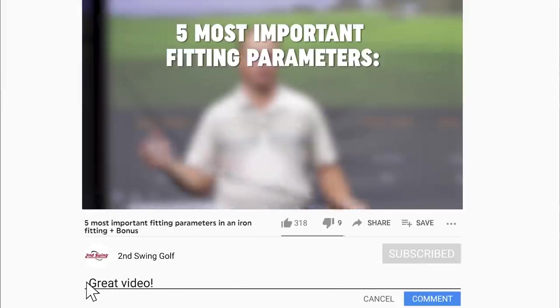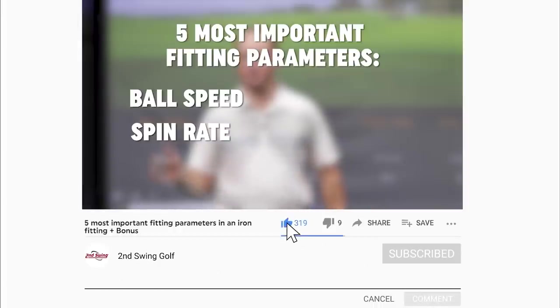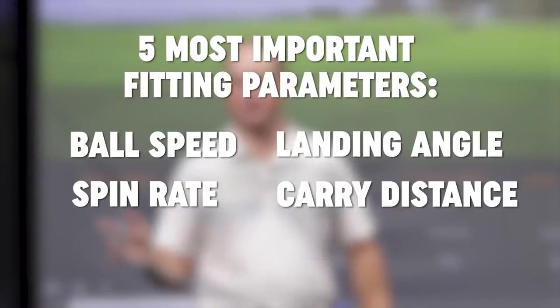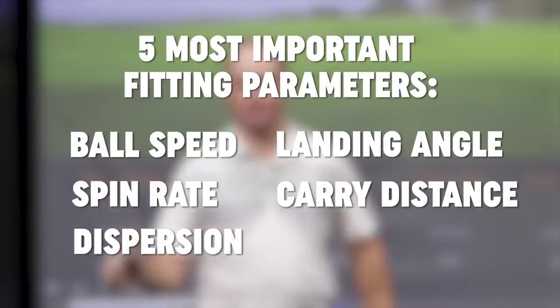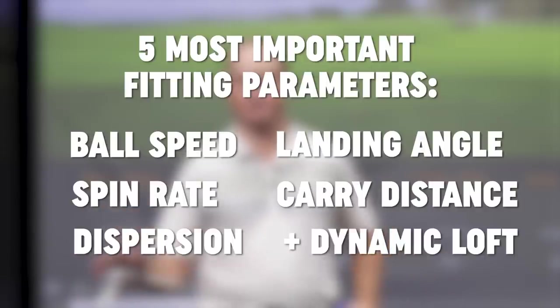The five most important factors are ball speed, spin rate, landing angle, carry distance, and dispersion. I'll also add in a little bonus on dynamic loft. The reason why dynamic loft is a bonus is it pertains to the golf swing. In club fittings we don't really go through a lesson — we're just focusing on the ball data, the data that you are presenting us on Trackman. There are many other variables on Trackman, but these five factors are the most important ones to focus on.